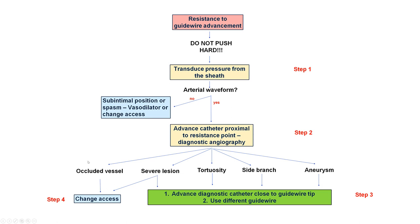Angiography can reveal the problem, which can be an occluded vessel that may require a change in axis point, or a significant lesion that might require crossing it with various guide wires and catheters, or sometimes switching to a different axis side. There can be tortuosity that can often be navigated, wire entry into a side branch that should be appreciated with the wire withdrawn and redirected, or an aneurysm that creates challenges to navigation through it.